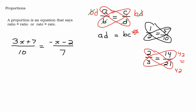So we can use that property to do a problem like this, to solve for x. So we know that ten times that numerator, negative x minus two, is going to equal three x plus seven times seven.